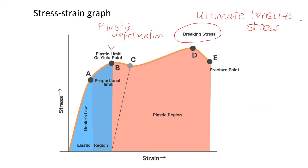A reminder about the elastic limit, also called the yield point: this is the point at which behaviour changes from elastic to plastic. Beyond this point, the material will no longer return to its original shape when the load is removed, and will undergo permanent deformation. Ultimate tensile stress is the maximum stress the material can withstand. Having reached that stress, the material is weakened and will fracture at a lower stress value.